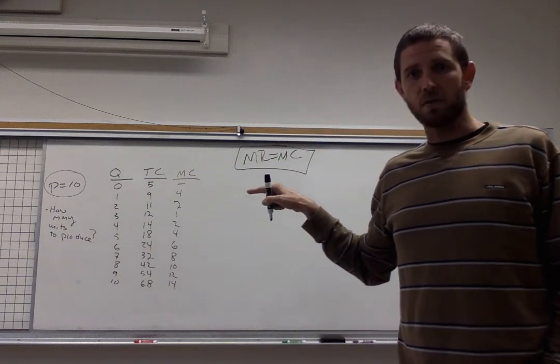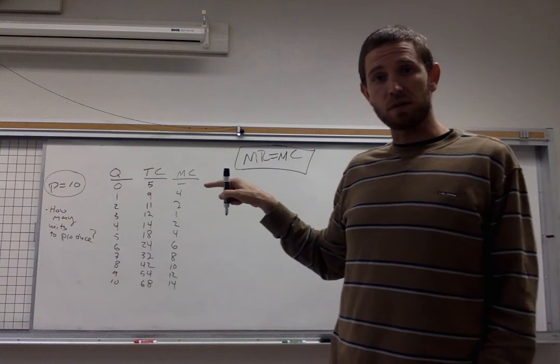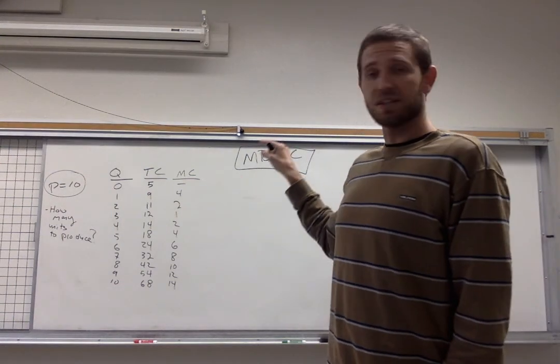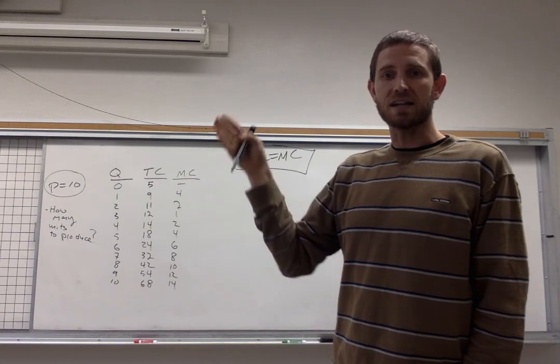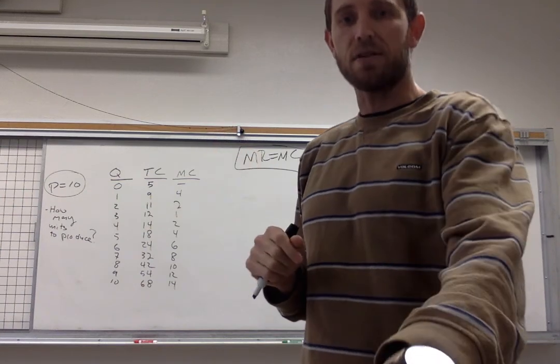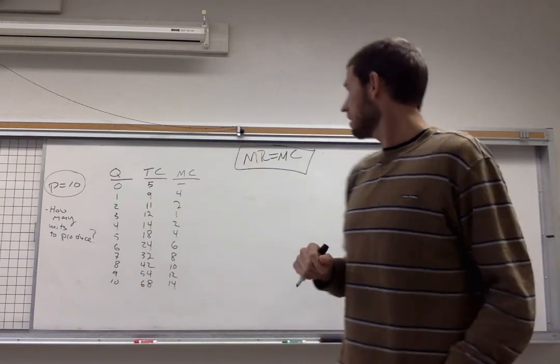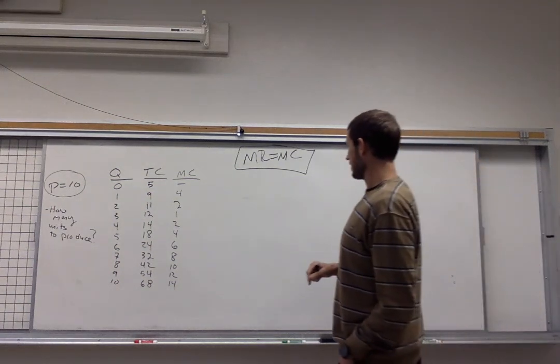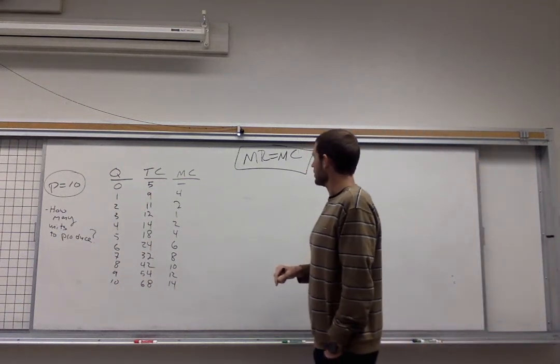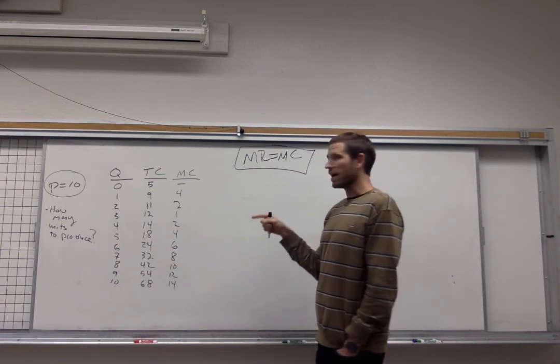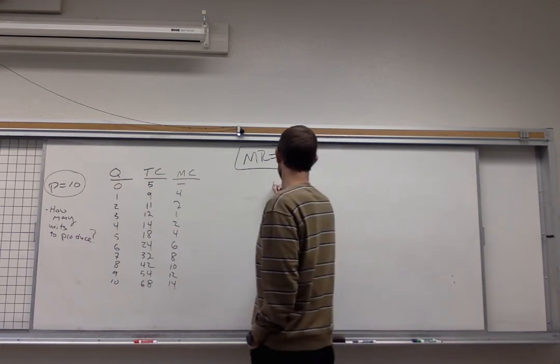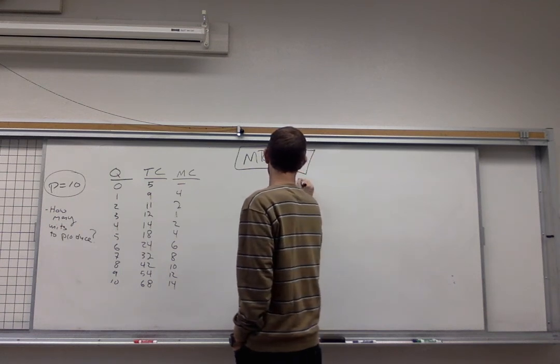Find that quantity for perfectly competitive firms and other firms as well. That's going to show you the quantity that will lead this business with the highest possible profit. That's what we're after. So let's take a look here and try to find that with our table. So one thing about perfect competition you want to keep in mind is that price is equal to the marginal revenue.